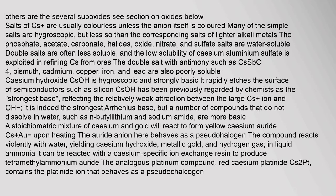Salts of caesium are usually colorless unless the anion itself is colored. Many of the simple salts are hygroscopic but less so than the corresponding salts of lighter alkali metals. The phosphate, acetate, carbonate, halides, oxide, nitrate, and sulfate salts are water soluble. Double salts are often less soluble, and the low solubility of caesium aluminium sulfate is exploited in refining caesium from ores.